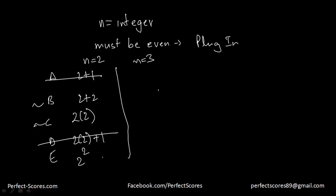Let's plug in again. Let's say n equals 3. We don't need to eliminate the answer options which are already eliminated. 3 plus 2 is not even, this is gone. 3 into 2 is even, this also stays.